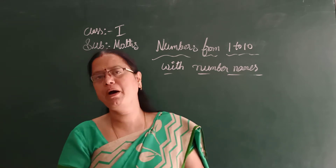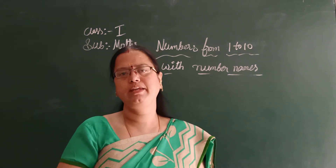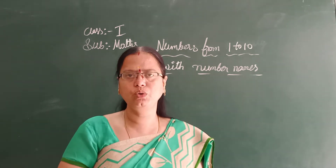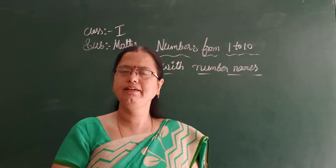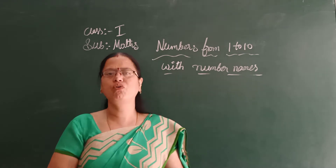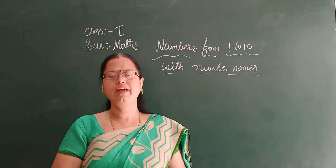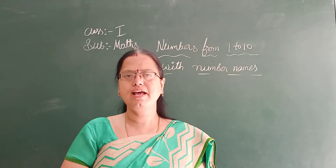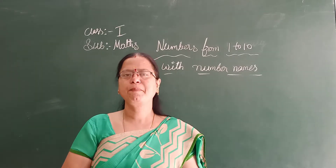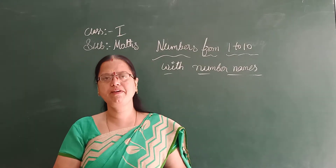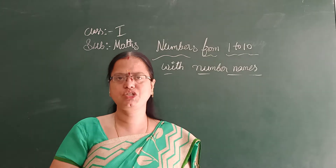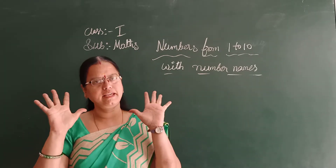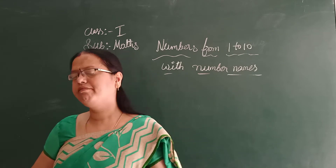Now all of you repeat after me with number names. O-N-E, 1. T-W-O, 2. T-H-R-E-E, 3. F-O-U-R, 4. F-I-V-E, 5. S-I-X, 6. S-E-V-E-N, 7. E-I-G-H-T, 8. N-I-N-E, 9. T-E-N, 10. Very good.